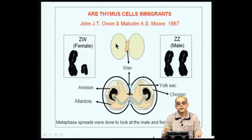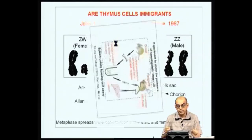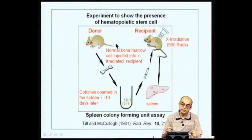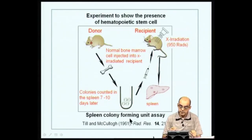Once this immigration aspect of cells going into the thymus was shown, the question arose: how can it be shown that a single hematopoietic stem cell actually gives rise to all the rest of the hematopoietic cells? This was addressed by an experiment called the spleen colony forming unit assay, shown by Till and McCulloch in 1961.